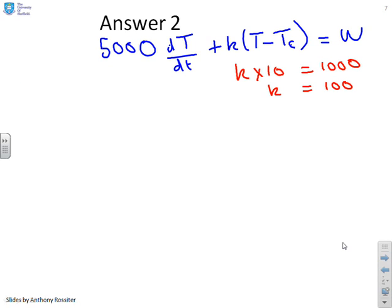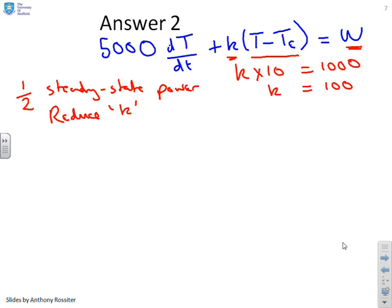Now the next bit said OK I want to halve the steady state. So how am I going to halve the steady state power? Well the only way to do that is I need to reduce K. That's the only way to do it. Because you can see the steady state power W is given by K times the steady state temperature difference. So let's reduce K to a half. So let's say K is now going to be 50. So that will reduce the steady state power. Or it says W equals 1000 will now imply T minus TE equals 20. Whichever way you want to look at it.